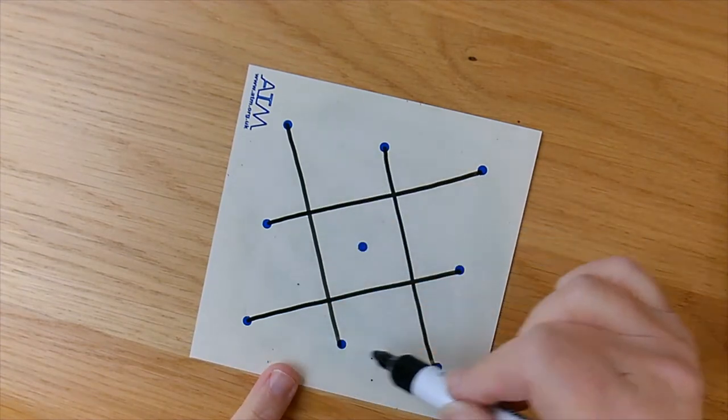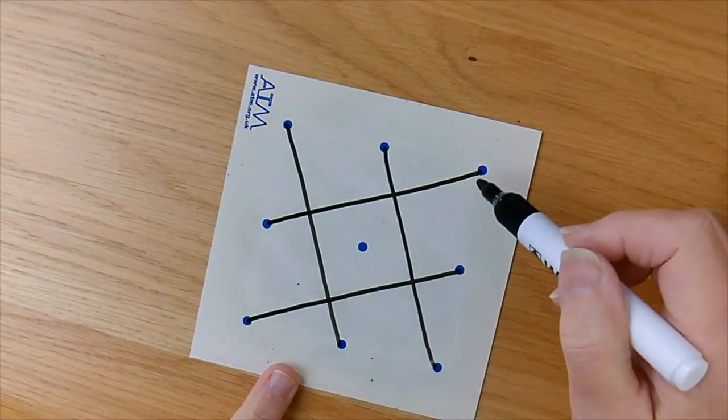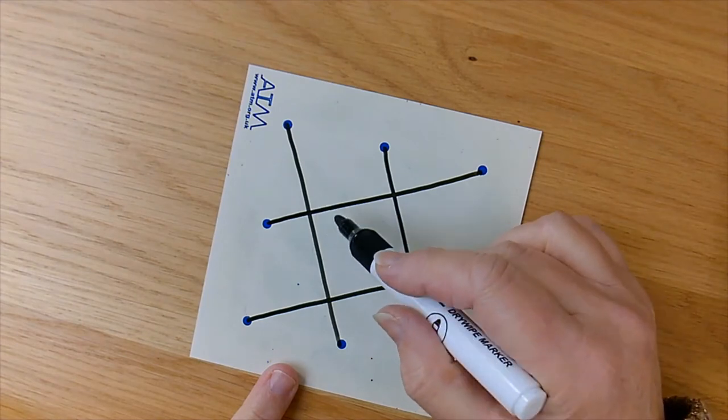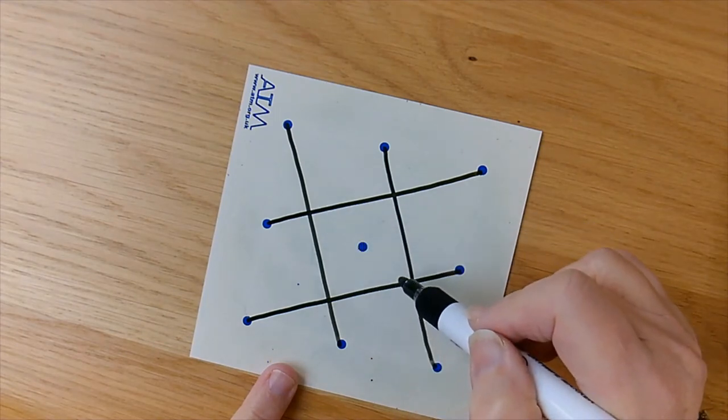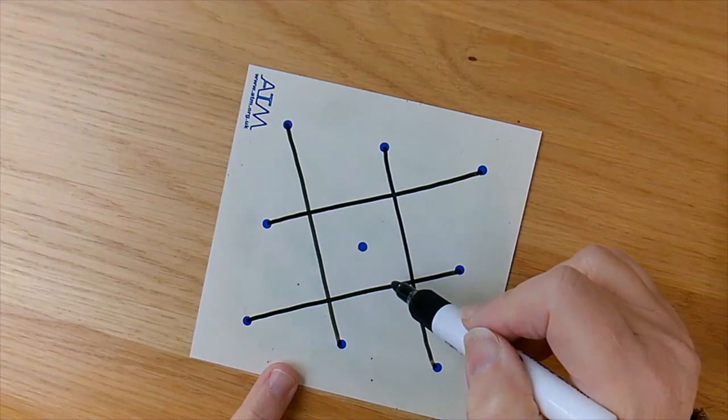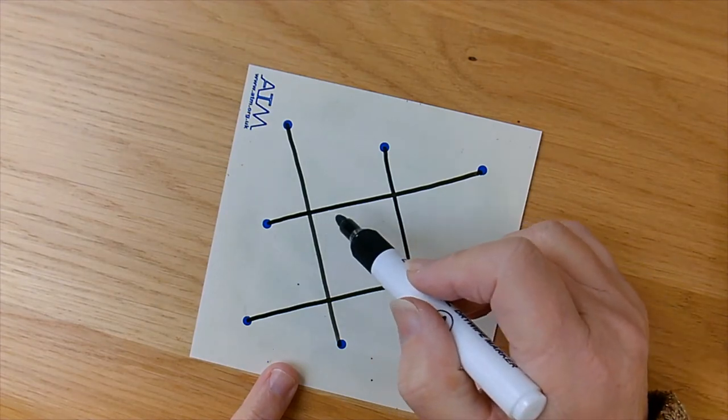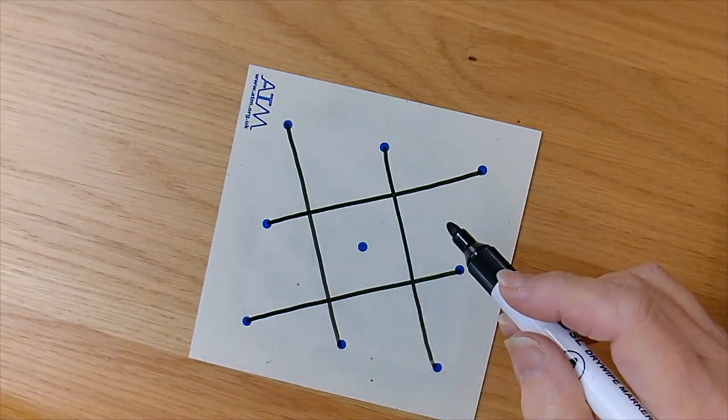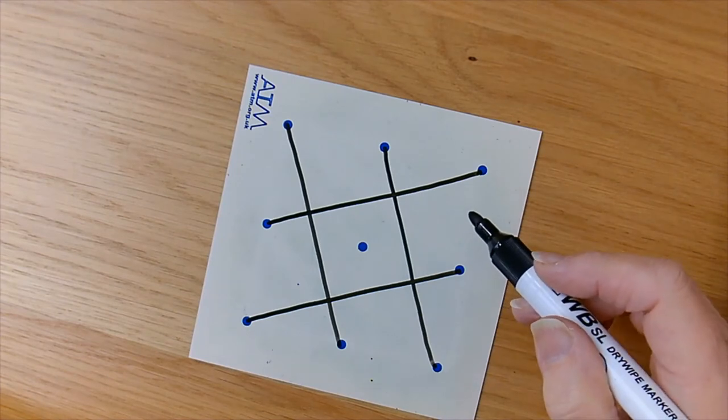What proportion of the area of the grid is this central square? Looks a bit like a quarter, but is it? So, two questions to start you off. You may be able to think of further questions.